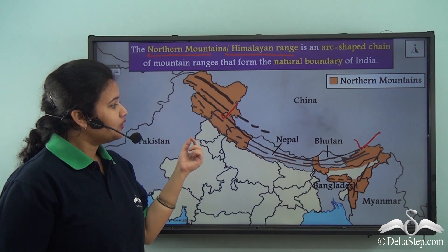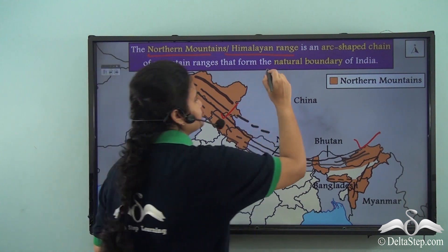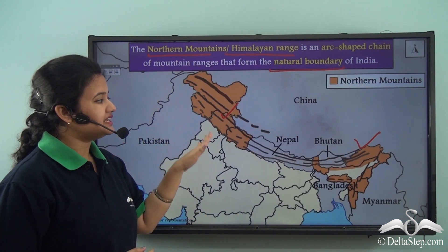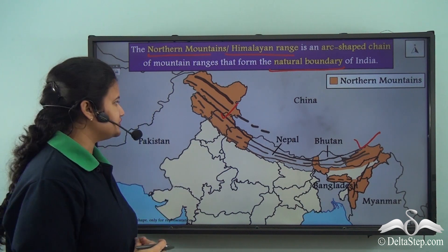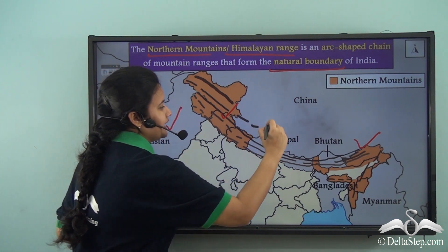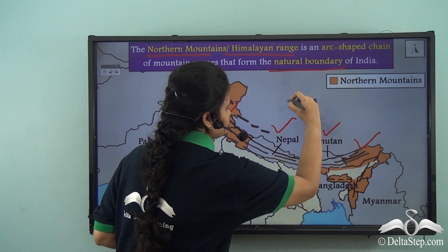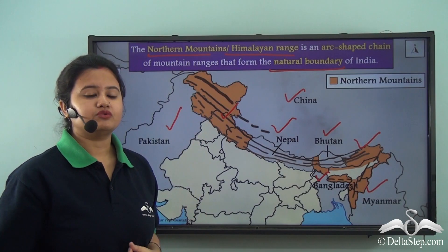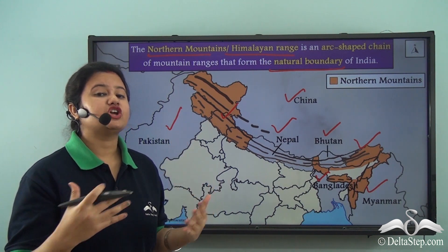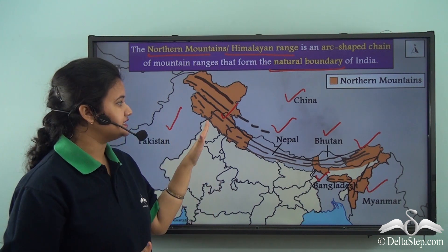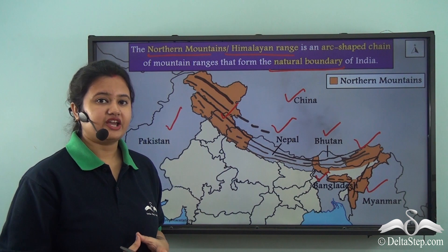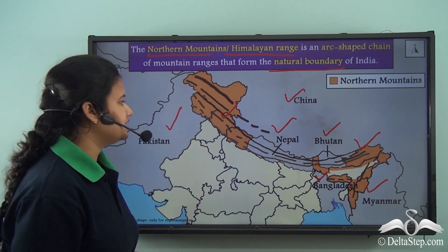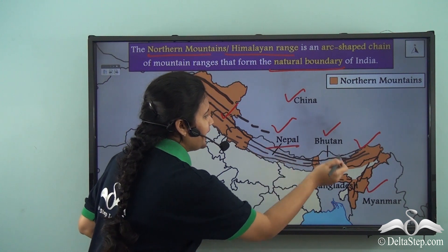The northern mountains form the natural boundary of India because they separate India from its neighboring countries like Pakistan, Nepal, Bhutan, China, Bangladesh, and Myanmar. So the northern mountains form a natural boundary or natural frontier of India. India also shares this physical feature with two of its neighboring countries, Nepal and Bhutan.